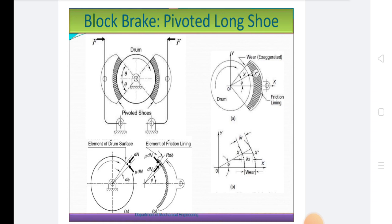In such cases, the block or shoe is pivoted to the lever instead of being rigidly attached to the lever. Due to pivoted block or shoe, there is uniform wear of the brake lining in the direction of applied force. In these brakes, the location of the pivot is selected such that the moment of frictional force about the pivot point is zero. Figure shows the free diagram of the pivoted shoes.